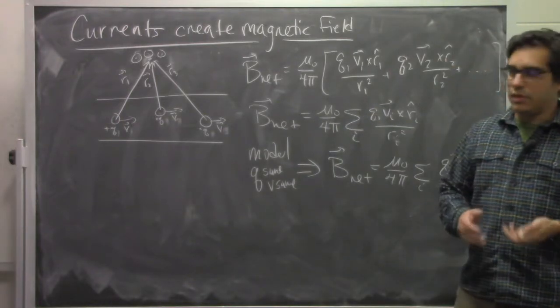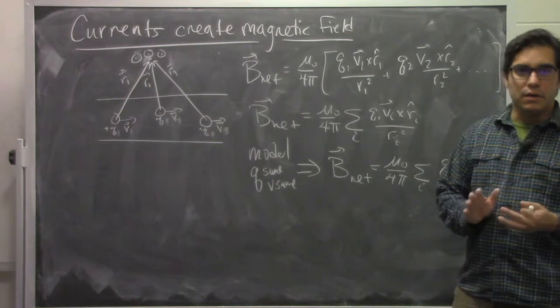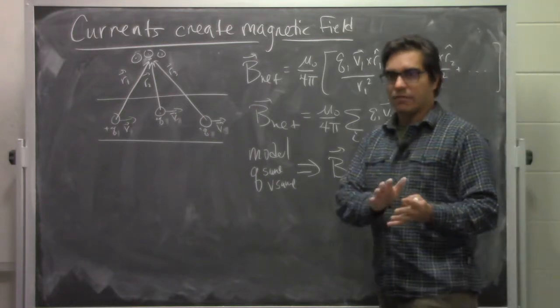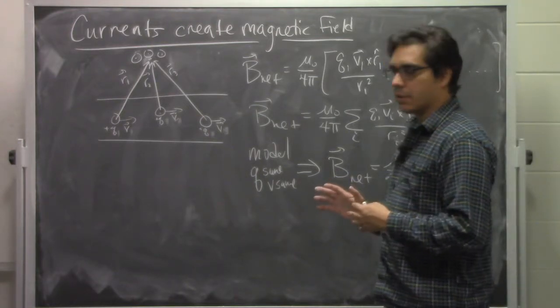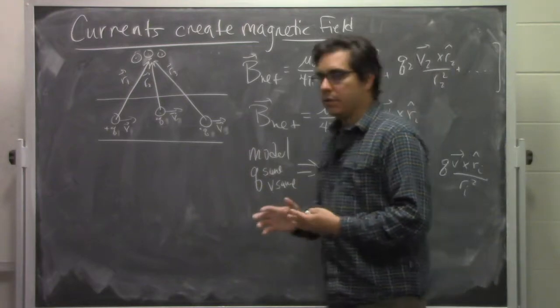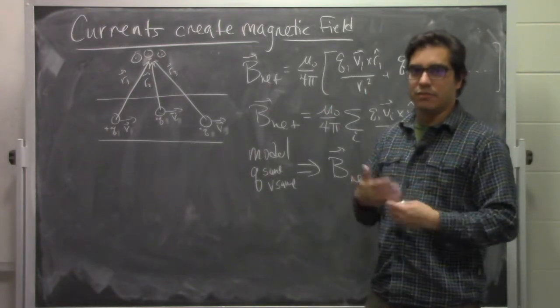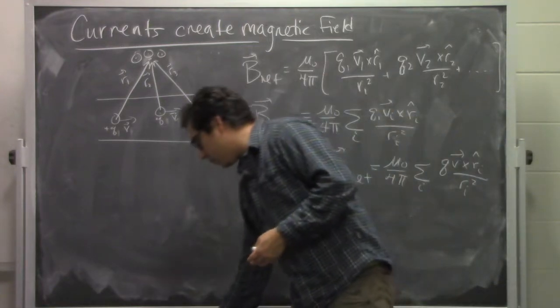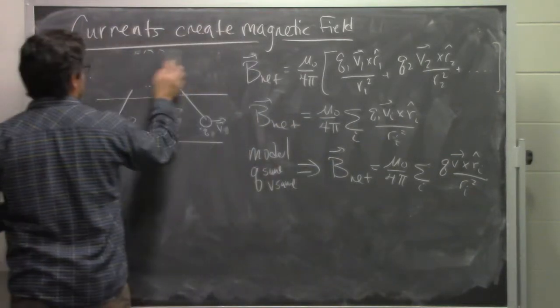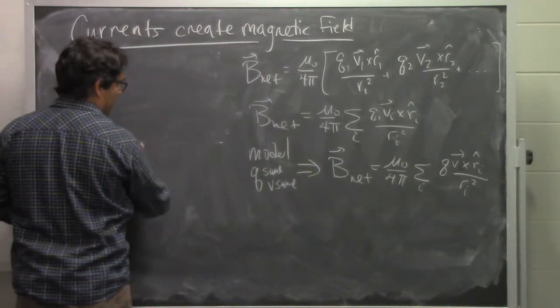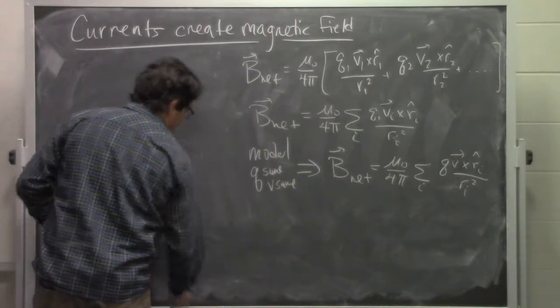What this allows us to do is to think about a section of the wire that has a whole bunch of charge moving in it. We can treat that as a current and we can think about adding this up in a continuous fashion just like we did when we were talking about getting from moving single charges to a current.